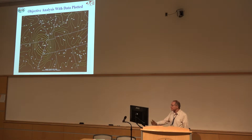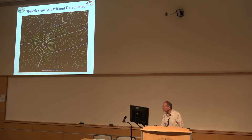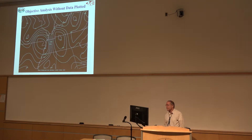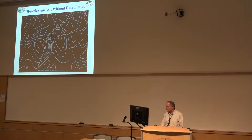Look at what difference it makes. This is the surface-based lifted index — it goes from minus 10 to 0 with a really tight gradient if you're lifting the surface parcel. Here's the CAPE field, surface-based CAPE — it goes from 5,000 to 500, an order of magnitude difference. Without underlying surface data to give you a hint of what's going on, it may be hard to interpret objective fields all by themselves.